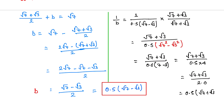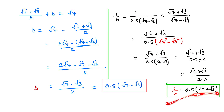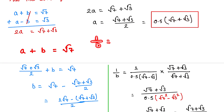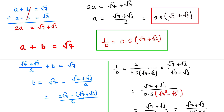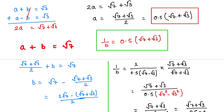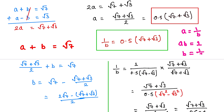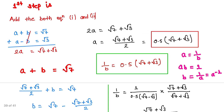Now look at this: the value of 1/b equals 0.5(√7 plus √3), and the value of a also equals 0.5(√7 plus √3). Both are equal, so a equals 1/b, which means ab equals 1, and therefore b equals 1/a, which can be written as a to the power of minus 1. So b equals a inverse.